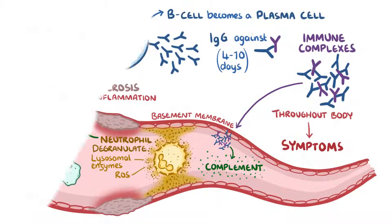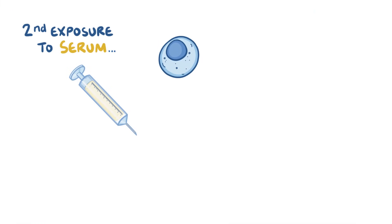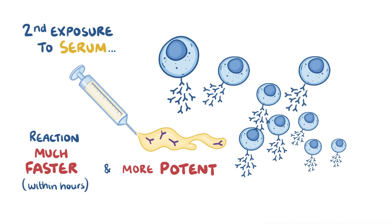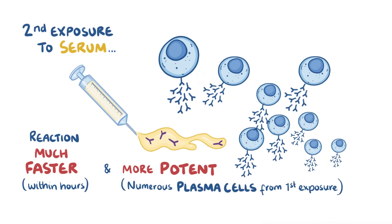Now, if this person has a second exposure to the serum, the whole reaction would be much, much faster — happening within hours — and also much more potent, because there are already large numbers of plasma cells from the first exposure, all prepped and ready to produce IgG antibodies against the antigen.